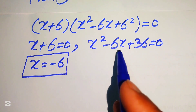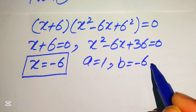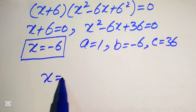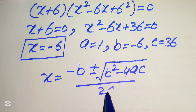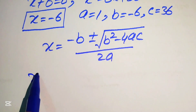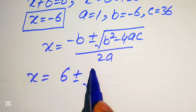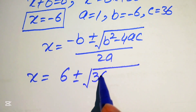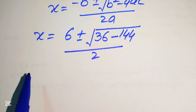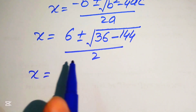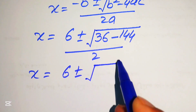To solve x² − 6x + 36 = 0, the coefficients are a = 1, b = −6, c = 36. Using the quadratic formula: x = (6 ± √(36 − 144)) / 2 = (6 ± √(−108)) / 2.